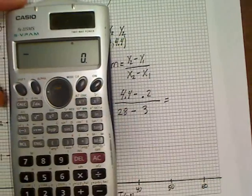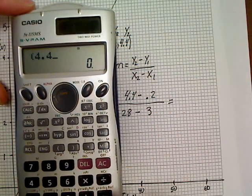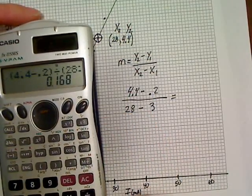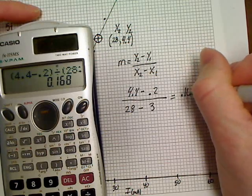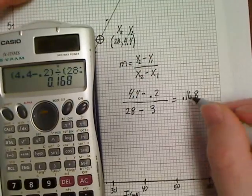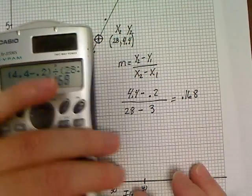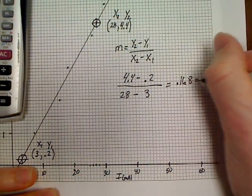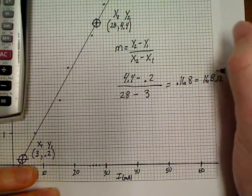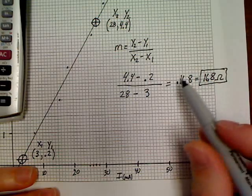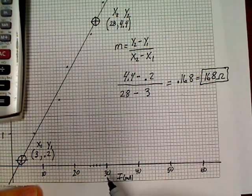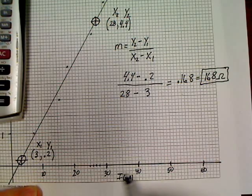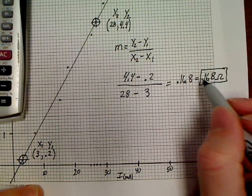I'm going to do mine in the calculator all at once — put the top in parentheses: (4.4 minus 0.2) divided by (28 minus 3). That answer is 0.168. But the resistor wasn't 0.168 — since this was in milliamps, I need to fix this answer. My answer is really 168 ohms. Just move your decimal over three places and it will fix the answer. We could have graphed in amps, but all those numbers would have been like 0.020, 0.030, making the graph much harder.